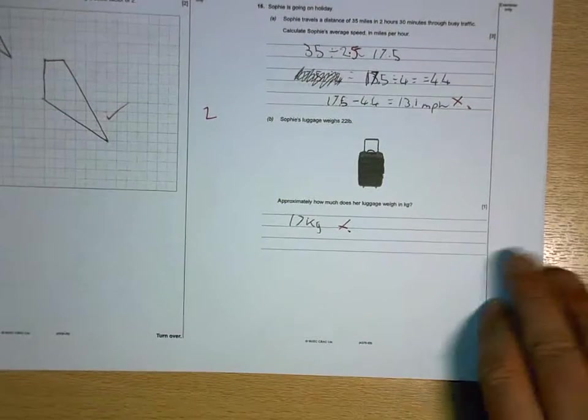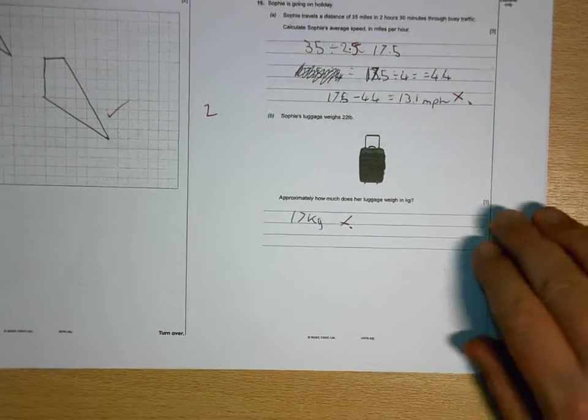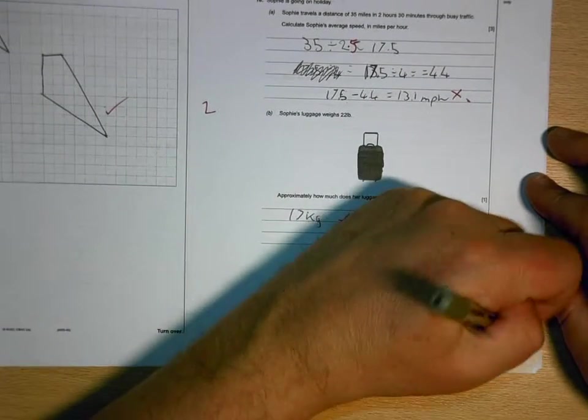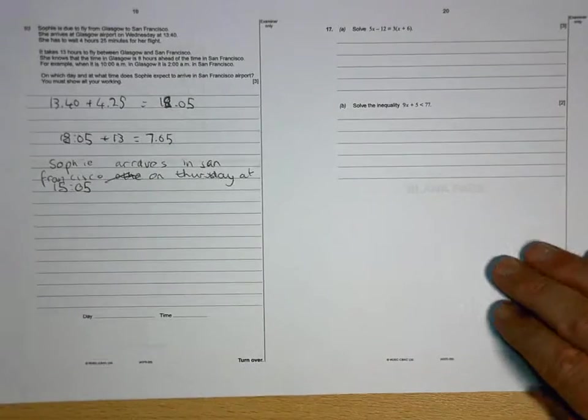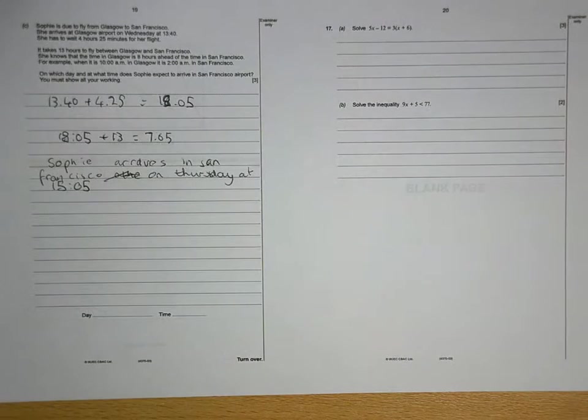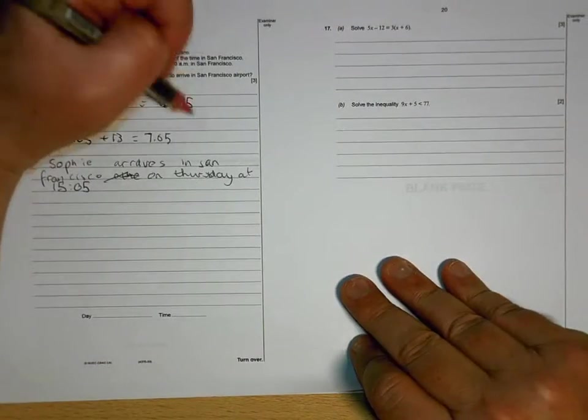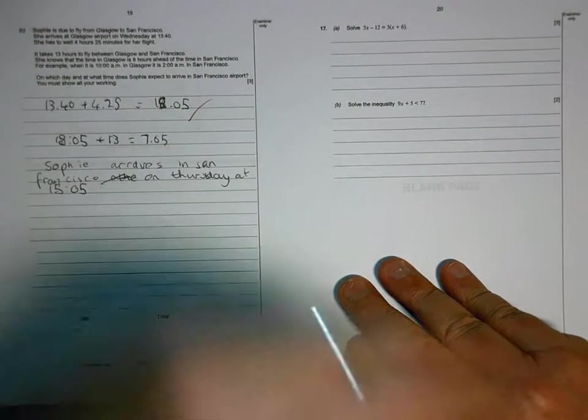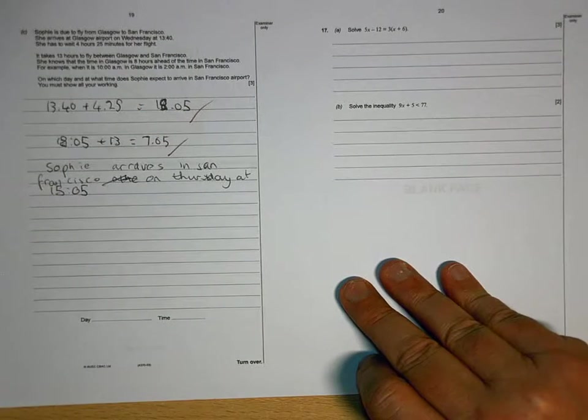17 kilograms is wrong with no method. So have a look at the video clip for that one. 18.05 is correct. 17.05 in the morning is correct.